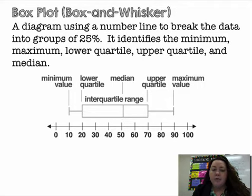So you have to have those five pieces: minimum, quartile one which is your lower quartile, median, quartile three which is your upper quartile, and the maximum. And then each section breaks it into four sections. Each section is worth 25%.